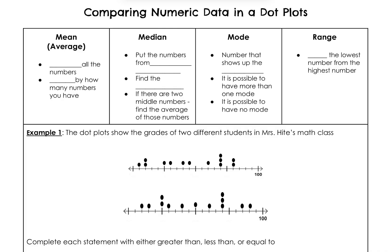The first one is mean. Mean is how we find your grade in school — your report card grade. We take all your individual grades, add them together, and then divide by how many grades you have. So if you have five grades, we add them and divide by five. If you have ten grades, we add them and divide by ten.